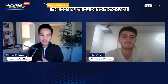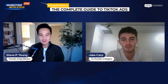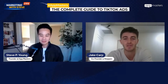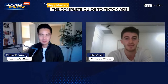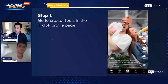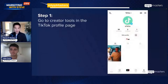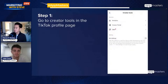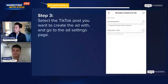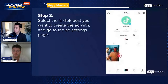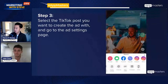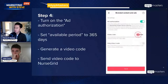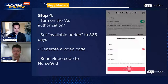Community ads aren't going to get you downloads, so I'd say do both, not one or the other. Community ads at $20 a day minimum spend will get you a few hundred followers every day. For Spark ads, you tell the influencer to go to their TikTok creator tools, turn on the ad authorization screen, go into the TikTok post's ad settings, turn on ads, and generate a code — that code gets sent over to you to run as a Spark ad.